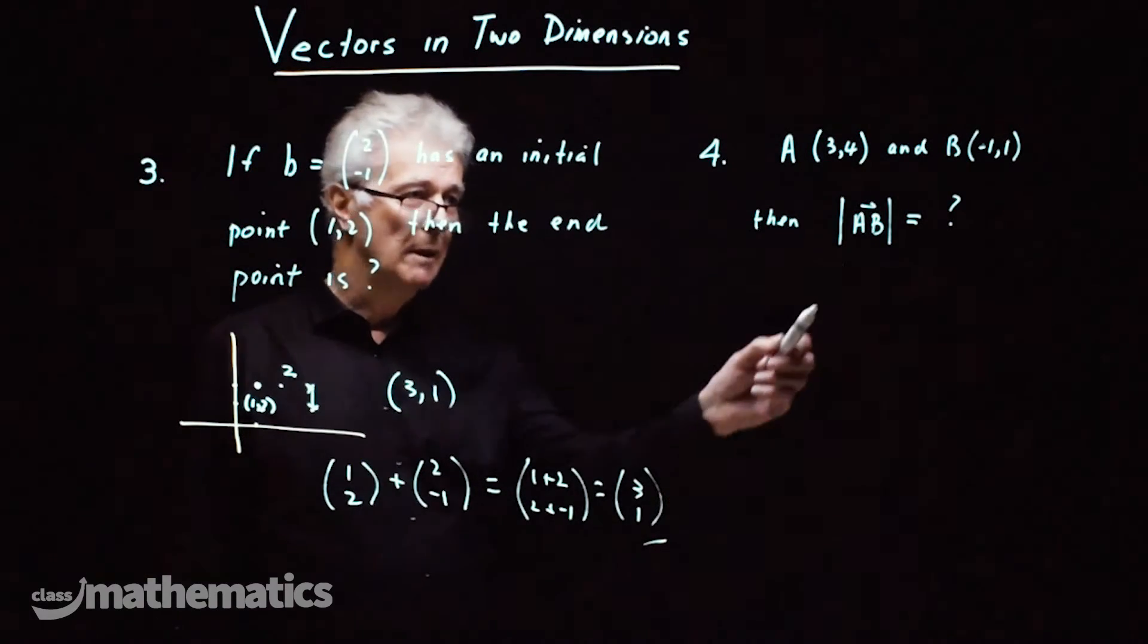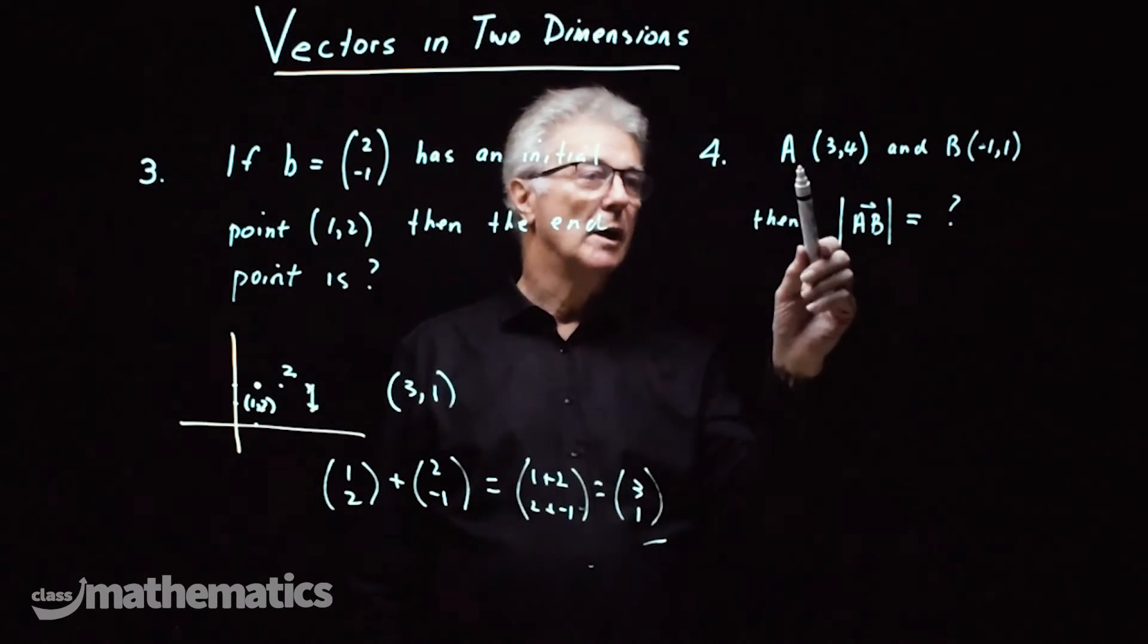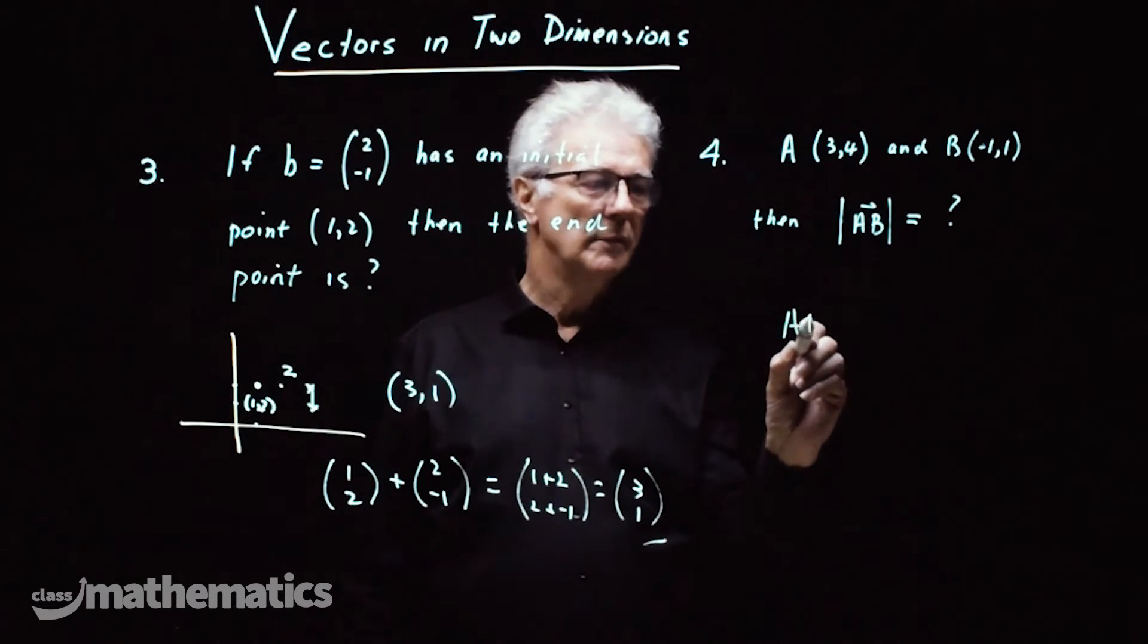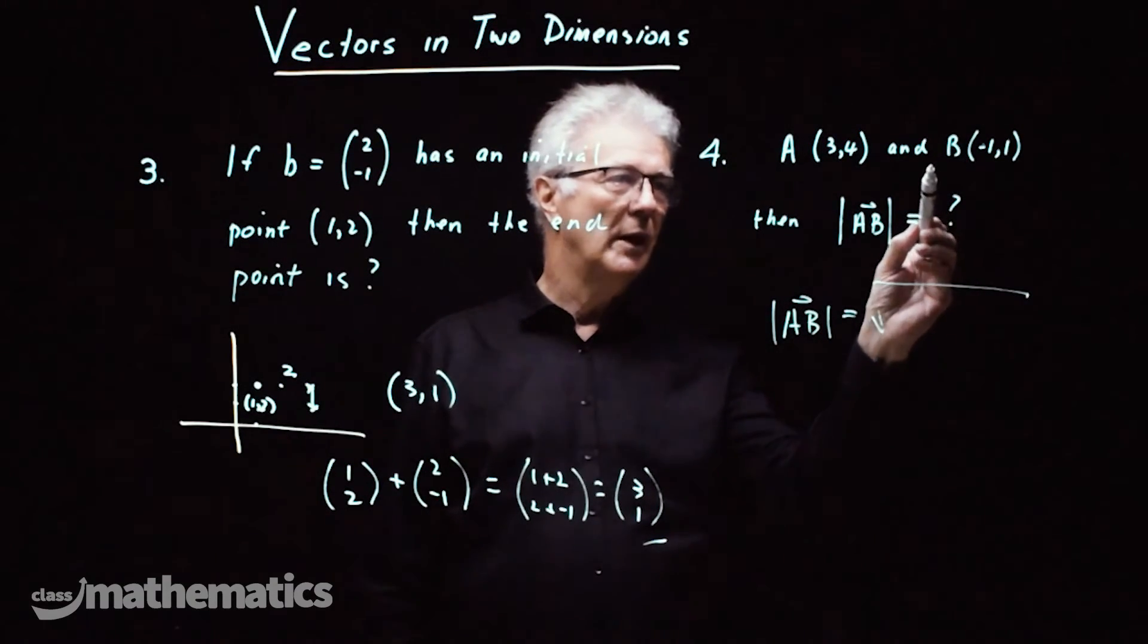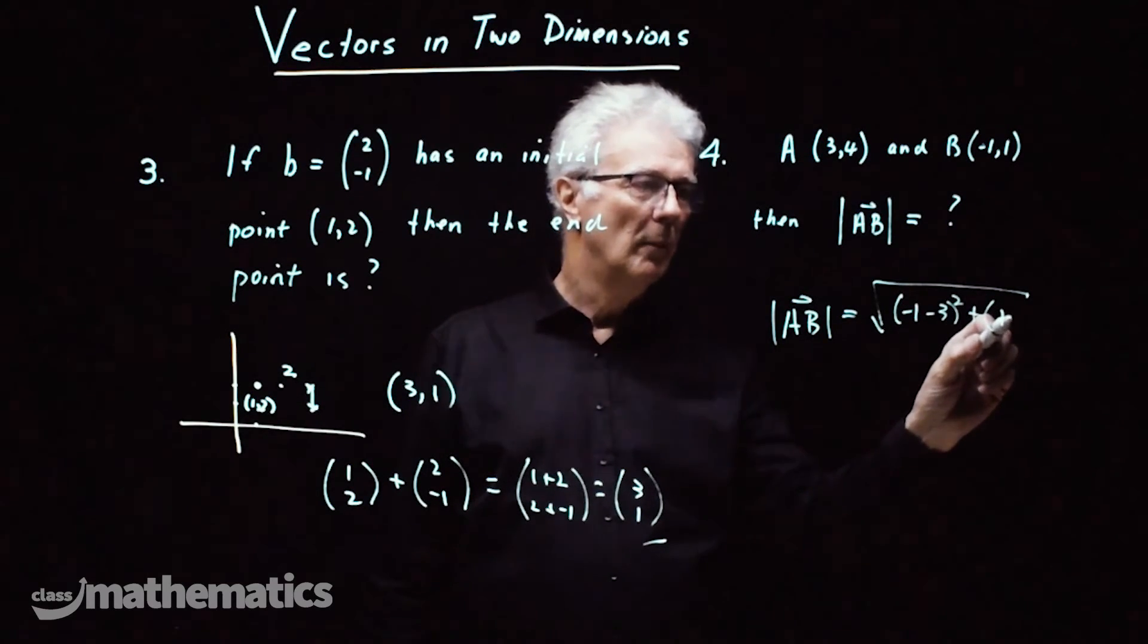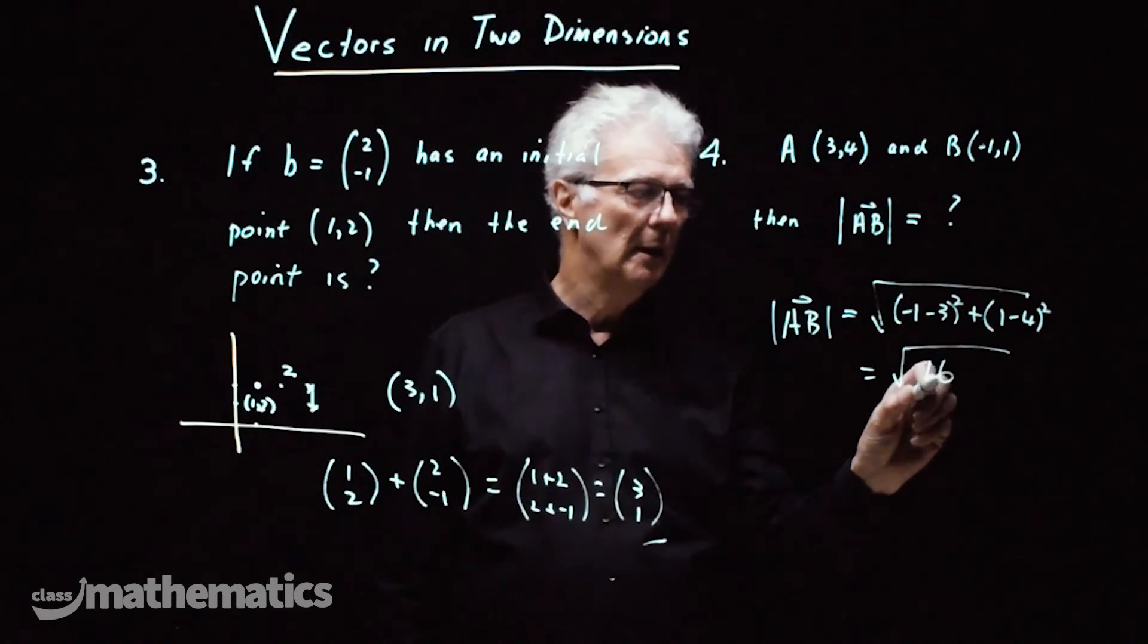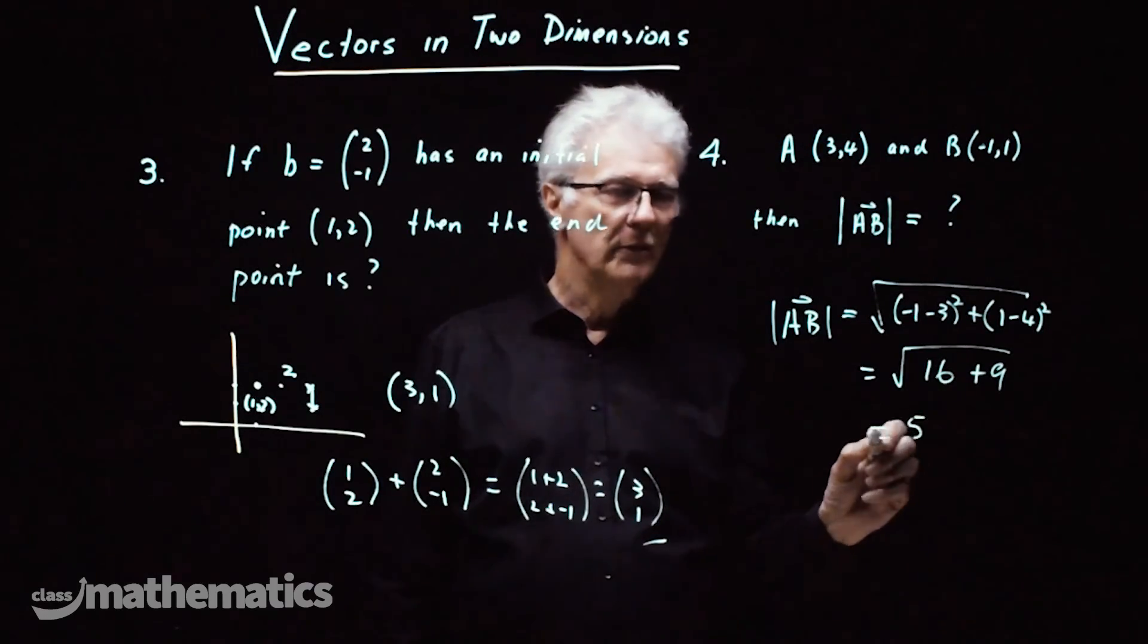Now number four, this is a really important concept, this is the magnitude of a vector. To work out the magnitude of a vector, we're going to use the distance formula. So the magnitude of AB is equal to the square root of the difference in these values. So that'll be minus 1 minus 3 all squared plus 1 minus 4 all squared and that gives me the square root of minus 1 minus 3 is minus 4 becomes 16 and this becomes minus 3 squared is 9 and that's the square root of 25 which is 5 as the magnitude.